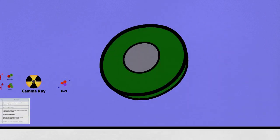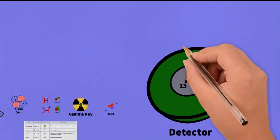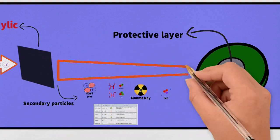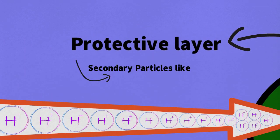A detector is placed inside the phantom. We use aluminum as a protective layer that will also produce secondary particles.